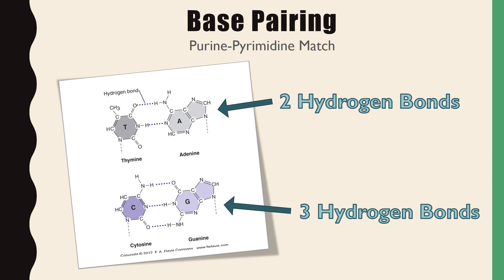Cytosine and guanine form three hydrogen bonds. To remember that GC forms three bonds while AT forms two, think: STIs spread more quickly when three people are involved versus two. A key structural note: a purine always bonds with a pyrimidine — two purines would be too large and two pyrimidines too small to maintain the proper diameter of the double helix once the DNA is twisted up.